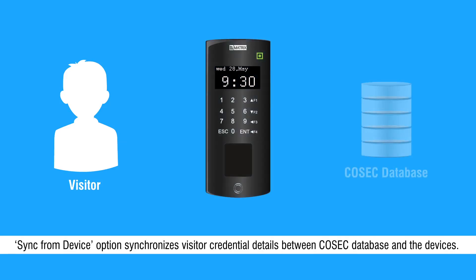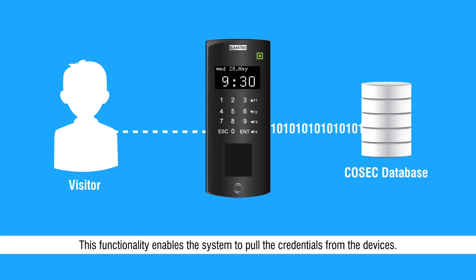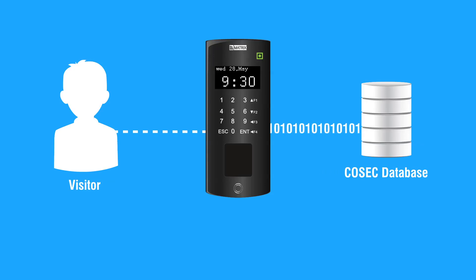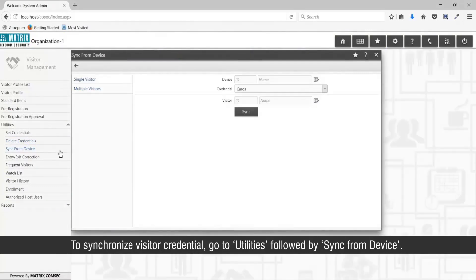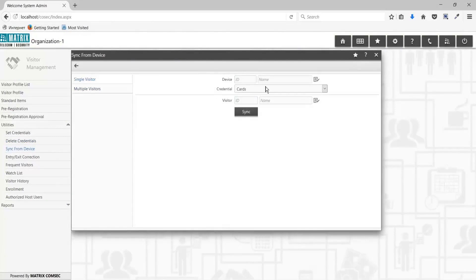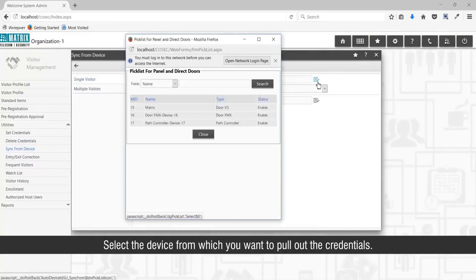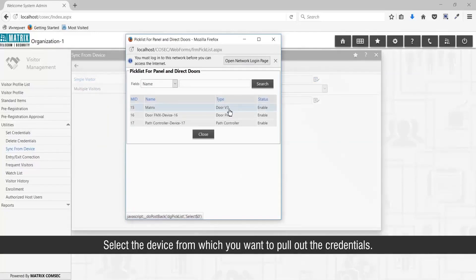The Sync from Device option synchronizes visitor credential details between the Cosec database and the devices. This functionality enables the system to pull the credentials from the devices. To synchronize visitor credentials, go to Utilities followed by Sync from Device. Select the device from which you want to pull the credentials.